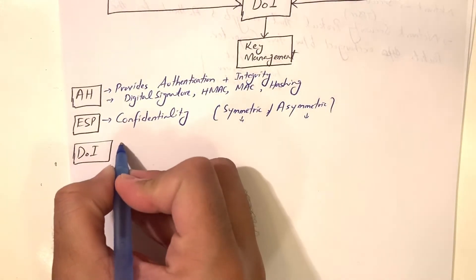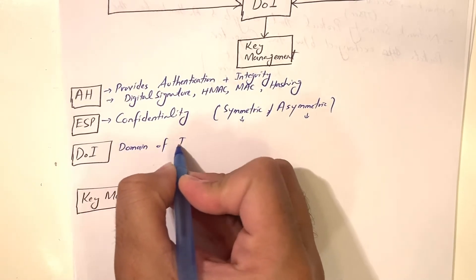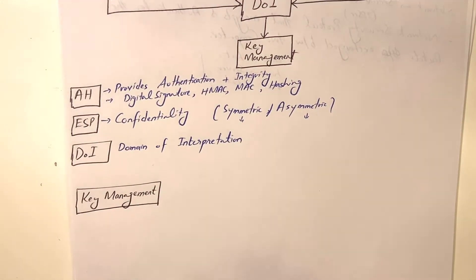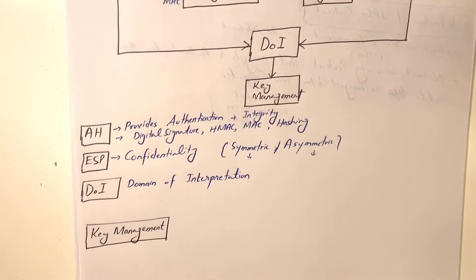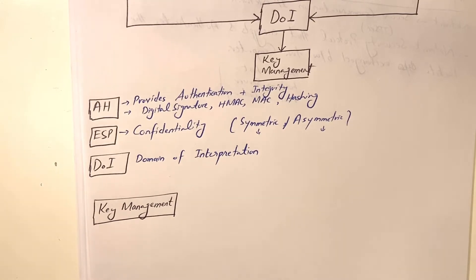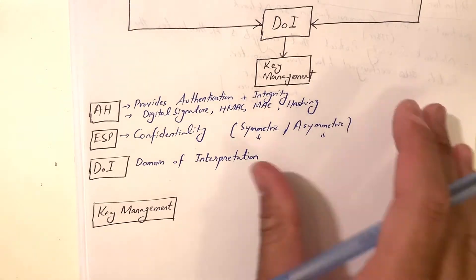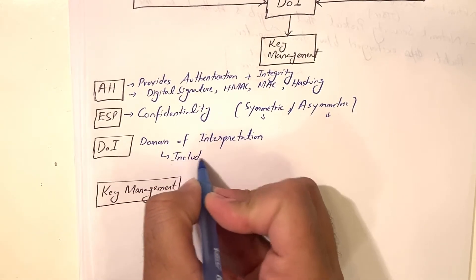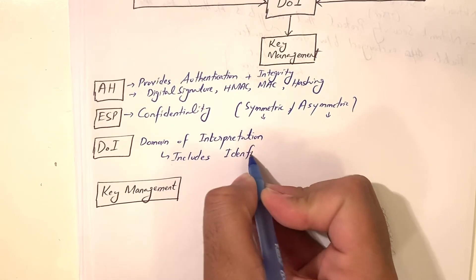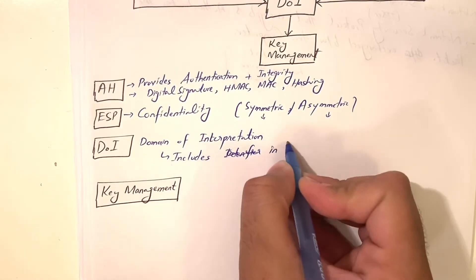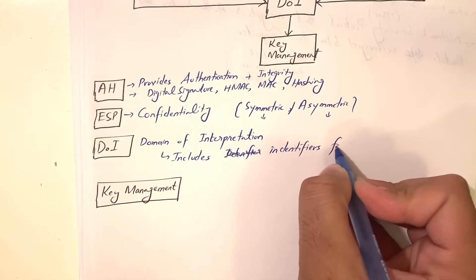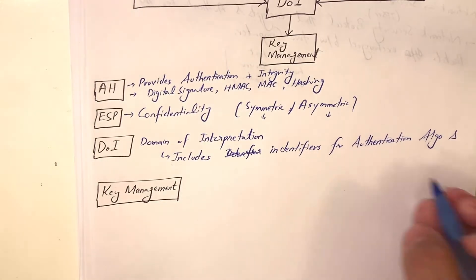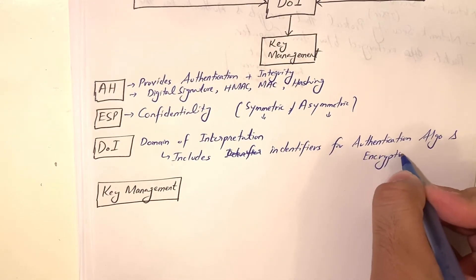It also includes DOI — Domain of Interpretation. DOI basically manages these applications and contains information about the authentication algorithms and encryption algorithms. It mainly includes the identifiers for authentication algorithms and encryption algorithms.